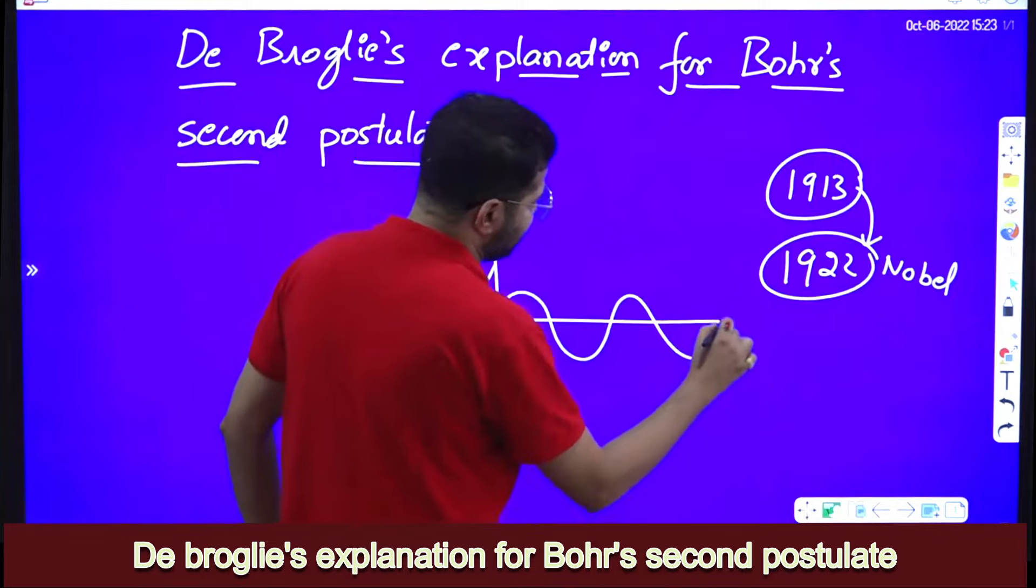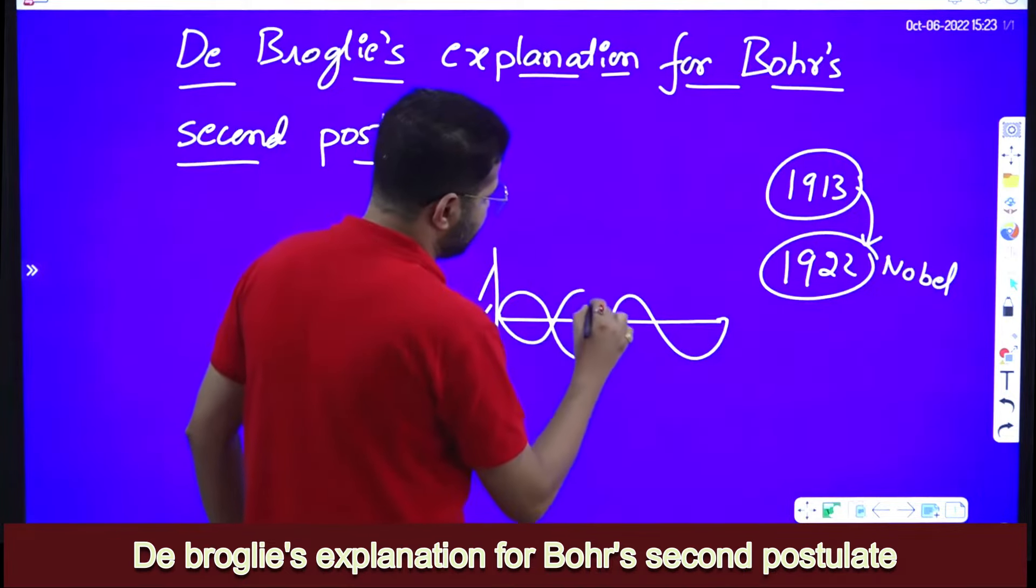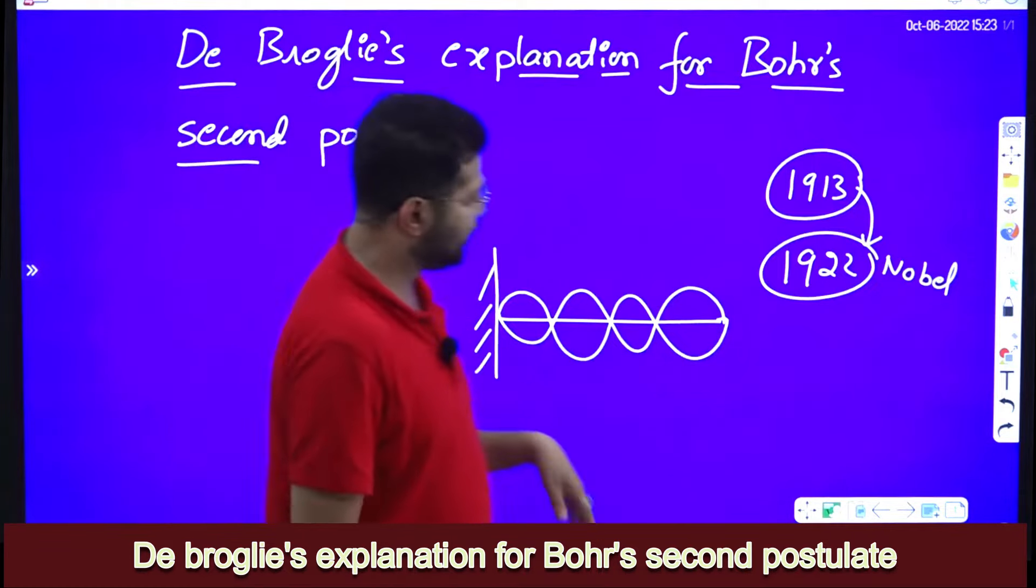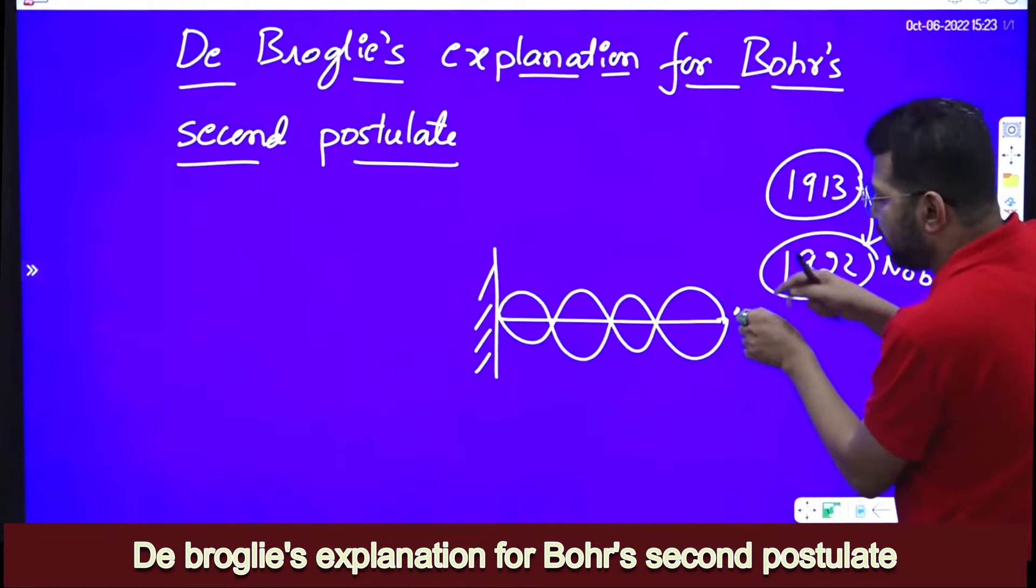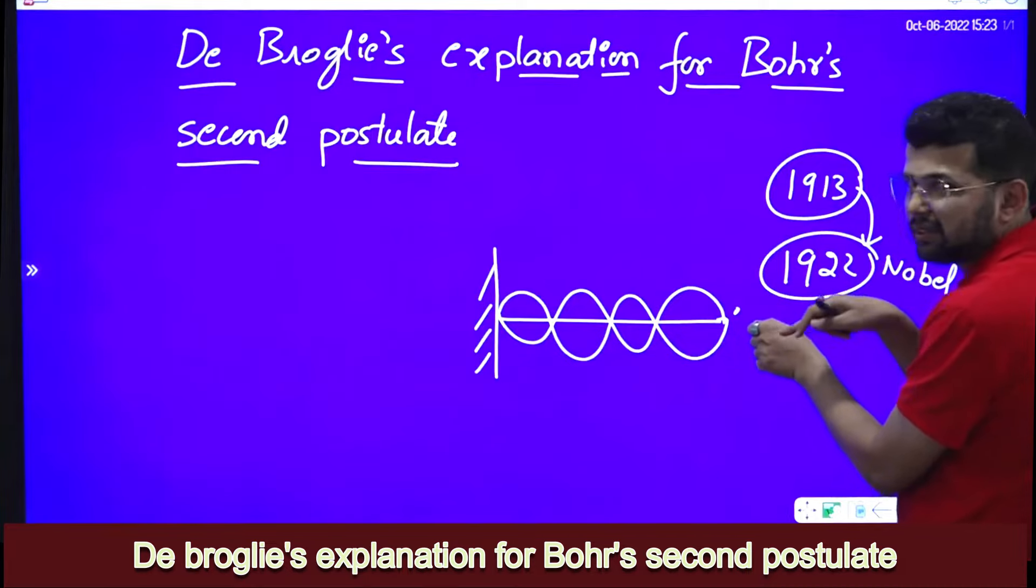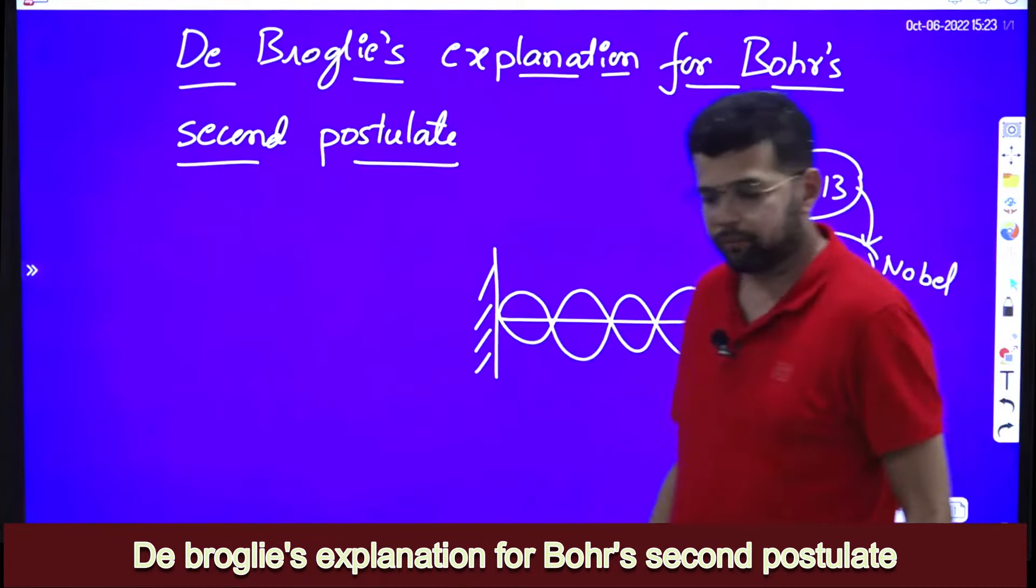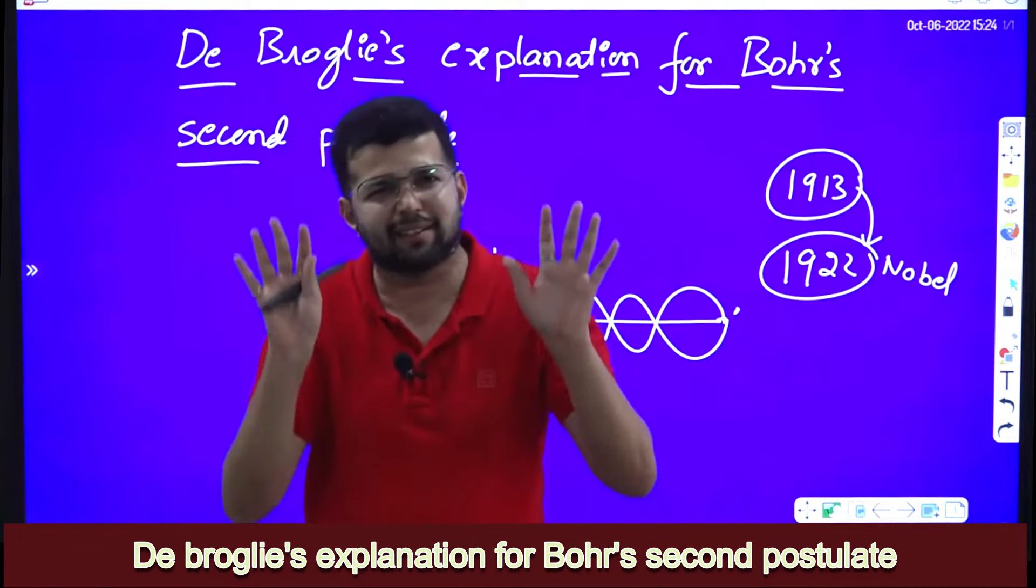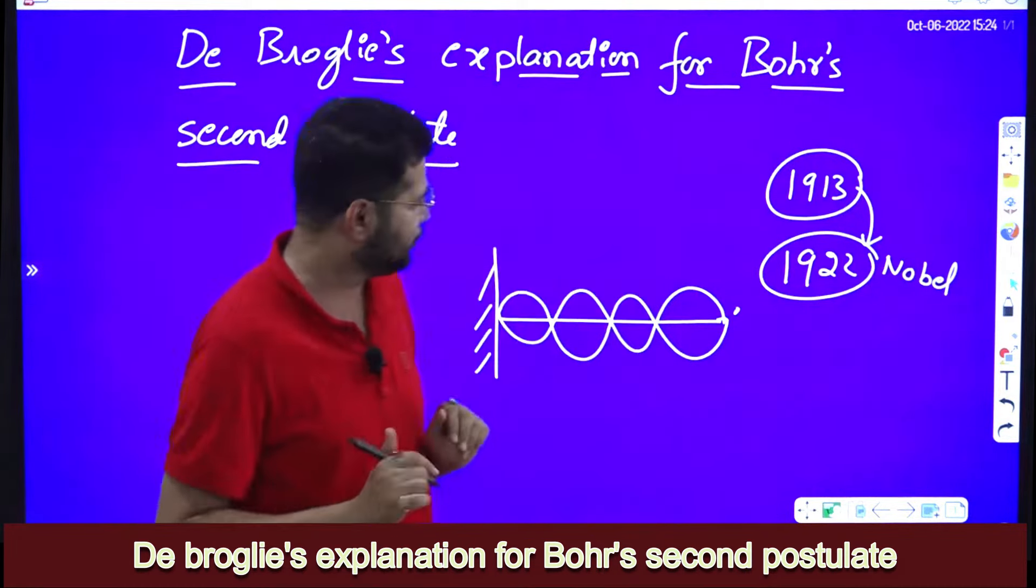You might have seen some structures like this. These are called standing waves or stationary waves. Say here there is a rigid support and you have a string or wire, and if you pluck it, if you give some disturbance, standing waves are formed. If you observe them closely, they appear like they are standing, they are at rest. That is why we call them standing waves.